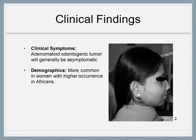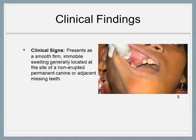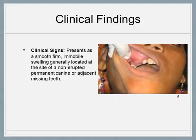Ninety percent of all cases occur before age 30. Although rare, AOT is highest in Africa at 1–39%. The tumor presents as a smooth, firm, immobile swelling generally located at the site of a non-erupted permanent canine or adjacent missing teeth. The buccal vestibule appears distended, yet the surface mucosa is not disfigured. The tumor is generally non-tender upon palpation and clinically demonstrates a straw-colored fluid upon aspiration. Facial disfiguration, along with the associated edentulous area, is the primary concern for care.